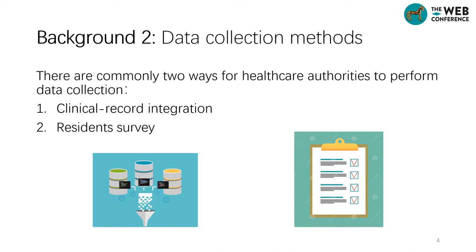There are commonly two ways for healthcare authorities to perform prevalence profiling: clinical record integration and residence survey. For authorities that adopt clinical record integration, they need to integrate data sourced from information systems belonging to multiple medical institutions to get an overview of mortality rates. However, such data integration is non-trivial. First, data access while preserving patient privacy comes at a non-trivial cost and overhead.